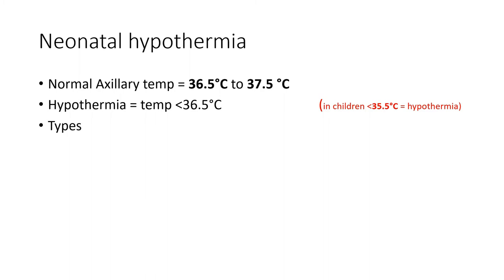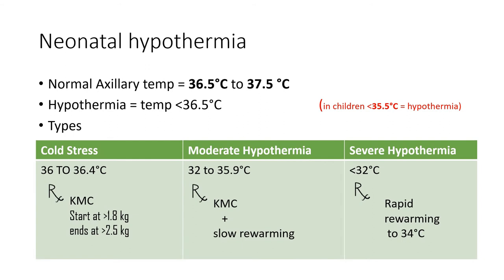Hypothermia is classified into three categories by severity. Cold stress occurs when body temperature ranges between 36.0°C and 36.4°C. Moderate hypothermia is when temperature ranges between 32°C and 35.9°C. Severe hypothermia is when temperature falls below 32°C.